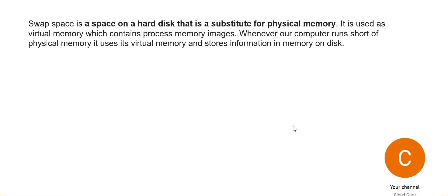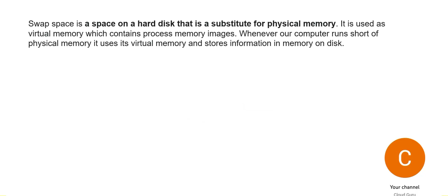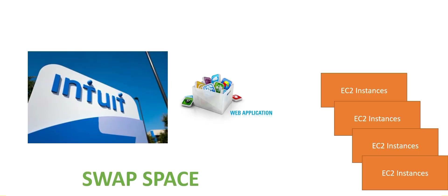Swap space is space on the hard disk — it is a substitute for physical memory. When your physical memory runs out, the system uses this space on disk. In this question, the swap space is low, and we need to monitor it.